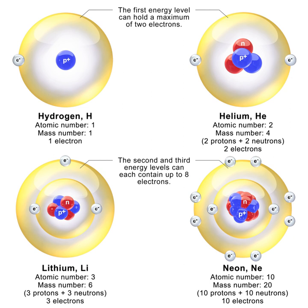If an electron in an atom is moving on an orbit with period T, classically the electromagnetic radiation will repeat itself every orbital period. If the coupling to the electromagnetic field is weak, so that the orbit doesn't decay very much in one cycle, the radiation will be emitted in a pattern which repeats every period, so that the Fourier transform will have frequencies which are only multiples of 1/T. This is the classical radiation law: the frequencies emitted are integer multiples of 1/T. In quantum mechanics, this emission must be in quanta of light, at frequencies consisting of integer multiples of 1/T, so that classical mechanics is an approximate description at large quantum numbers.